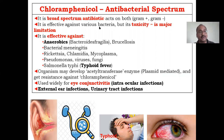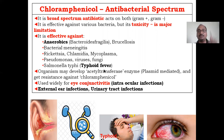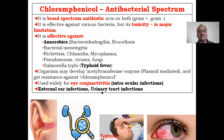Chloramphenicol's antibacterial spectrum: it is very powerful but due to various side effects it is not widely used. It is a broad-spectrum antibiotic acting against gram-positive and gram-negative bacteria. It is very effective against anaerobic bacteria, Brucellosis, bacterial meningitis, Rickettsia, Mycoplasma, Pseudomonas, and very rarely fungi. It is mainly prescribed in typhoid fever, but toxic effects limit its use. Popularly it is known for eye conjunctivitis and as an eye ointment.